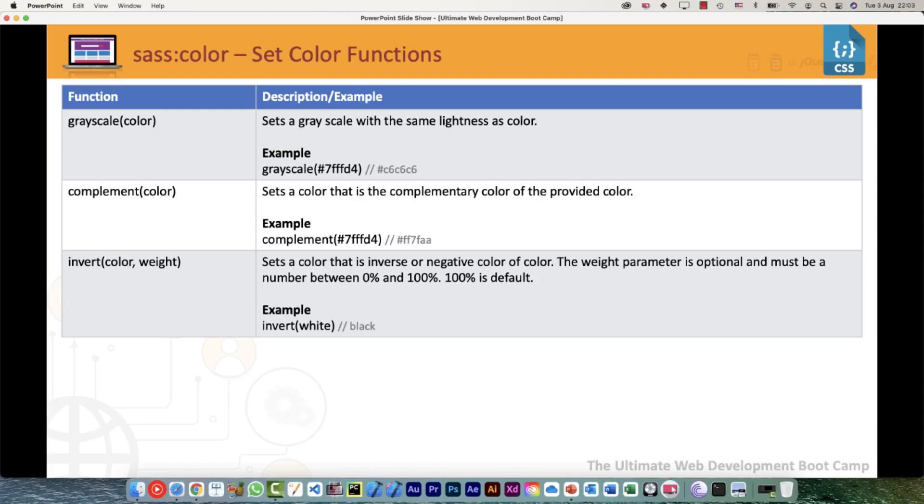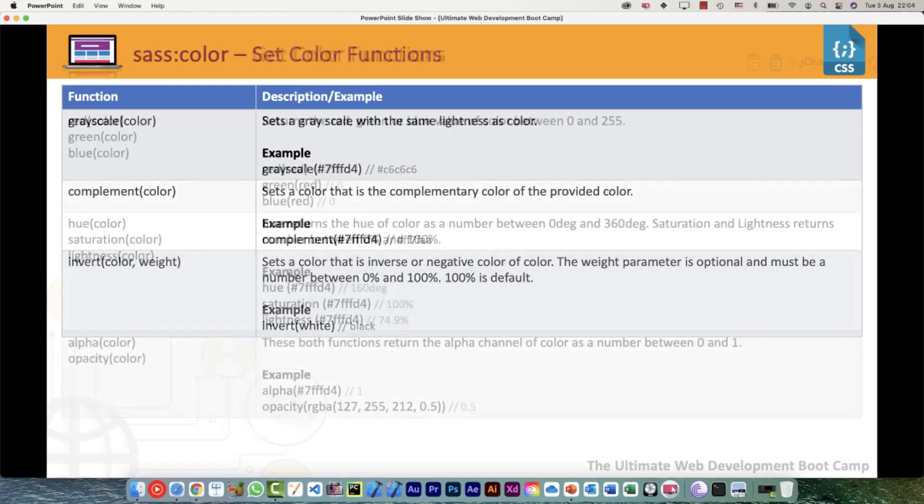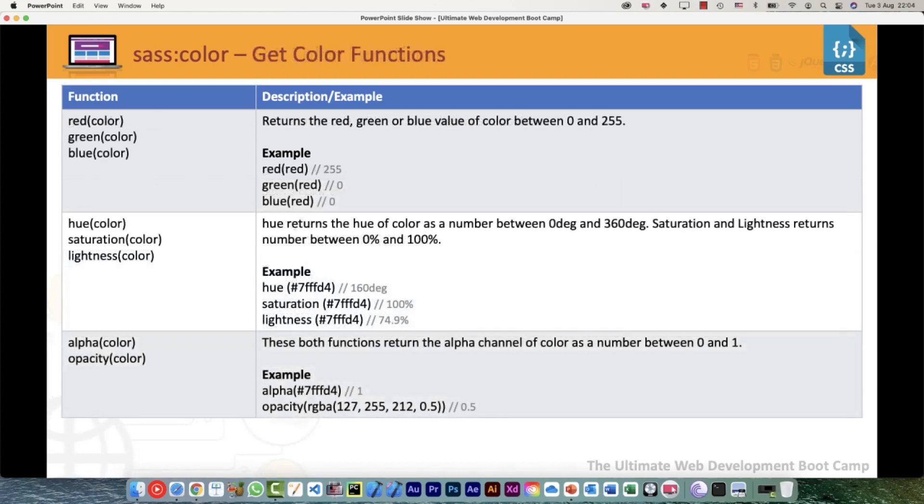Then grayscale: whatever color we pass to that, it would set a grayscale tone for that. Complement colors would be setting a complementary color of the provided color. I would urge that you just provide some color, use the function, and see what the results are like to see how this works. Invert, color, and weight: invert would simply have the opposite color of it. Like if you're asking for an inverted color of white, that would be black and vice versa.